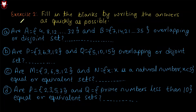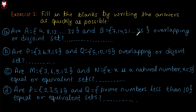Hello and welcome everyone to our MiriSchool platform. This video has an exercise to solve. Fill in the blanks by writing the answers as quickly as possible. Question number A: set A equal to 4, 8, 12 up to 32, and set B equal to 7, 14, 21 up to 35. Are they overlapping or disjoint sets?